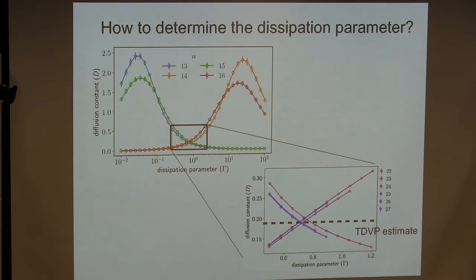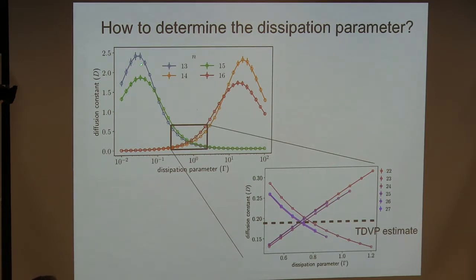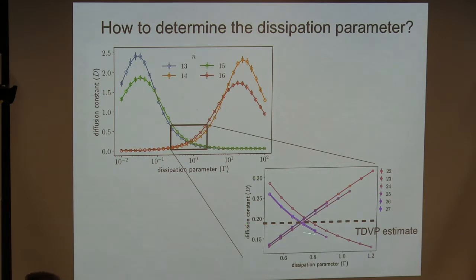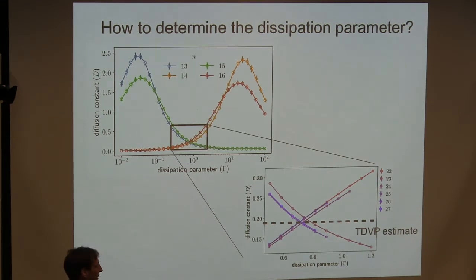We determine the dissipation parameter gamma as follows. When gamma is very small we get zero as I promised, and when gamma is very large it's also zero. In between there is a point where all the lines — corresponding to different truncation sizes — meet very well, and that is where the diffusion constant is exactly what I calculated from time-dependent variational principle. So there is an ad-hoc way to determine the diffusion constant by the point where it becomes independent of truncation size.